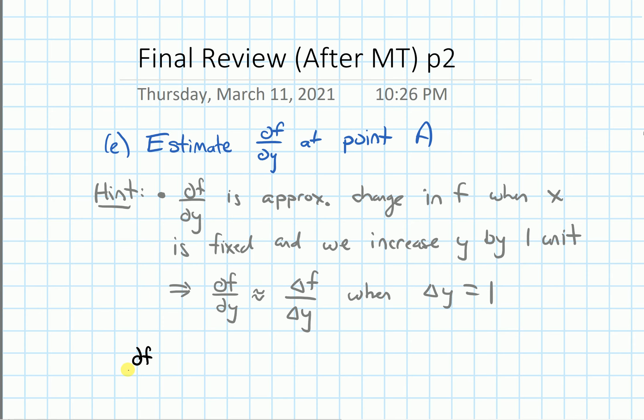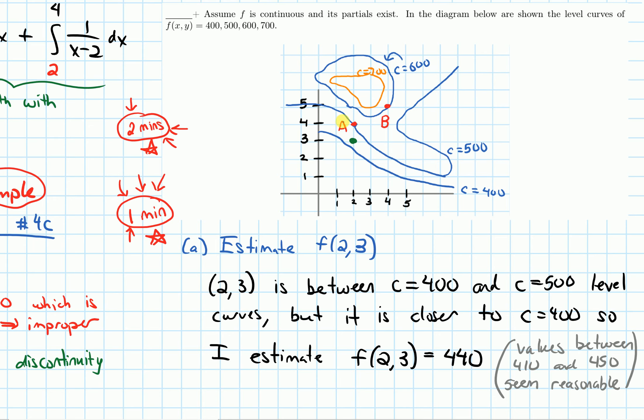In my picture, I need to estimate df dy. And it is approximately equal to the change in f over the change in y. And I'm assuming the change in y is 1. But how much is my function's output changing if I'm increasing y by one unit? So let's go to the picture for this. I'm starting at point A, keeping x fixed, and then increasing y by one unit. That makes us end up here. At that point, notice that that point is on the level curve where c equals 600. At point A, we were on the level curve where c was 500, and we've now moved up to the level curve where c is 600.